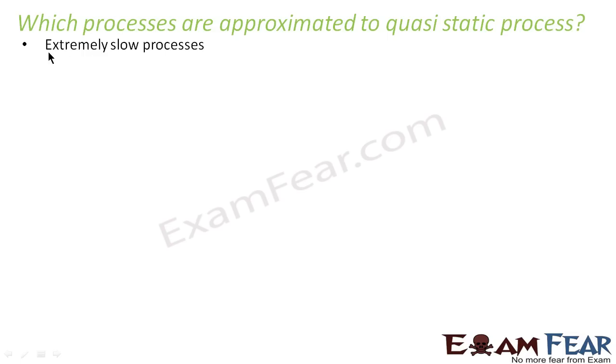The first criteria is extremely slow processes. Quasi-static processes are extremely slow. Any fast process cannot be quasi-static because a process which takes place rapidly will not be in equilibrium with the surroundings because there will be marked difference in its macroscopic variables. So it will not be in equilibrium.